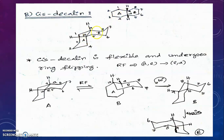In the puckered ring form, both rings exist in chair form. The numbering is 1, 2, 3, 4, 5, 6, 7, 8, 9, 10. With respect to this cyclohexane ring — ring A — this bond is the equatorial bond; this hydrogen is equatorial. And with respect to this carbon, this hydrogen is axial. So at the 1,2-position, one hydrogen is axial and the other is equatorial, making it the cis isomer. This structure is cis-decalin.